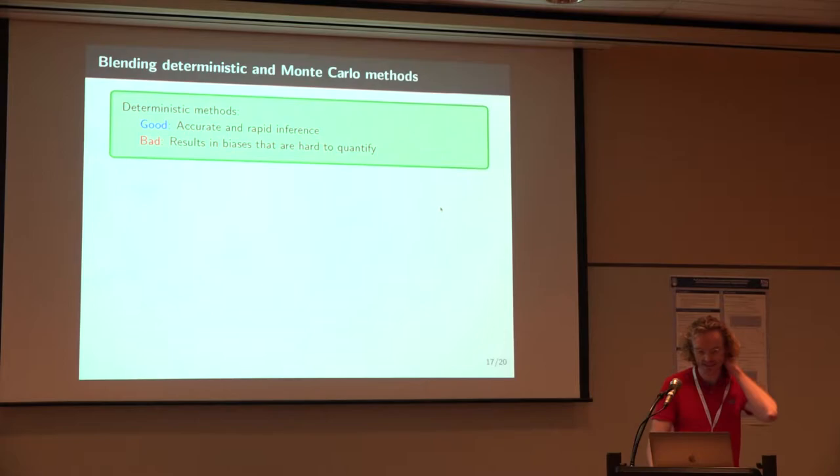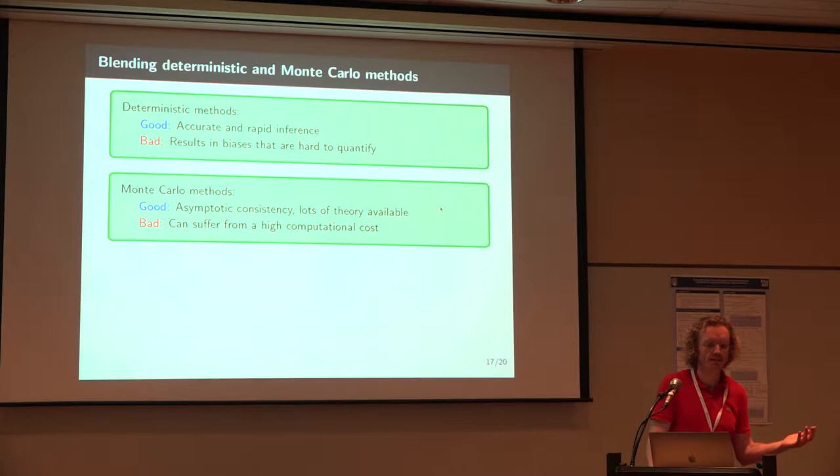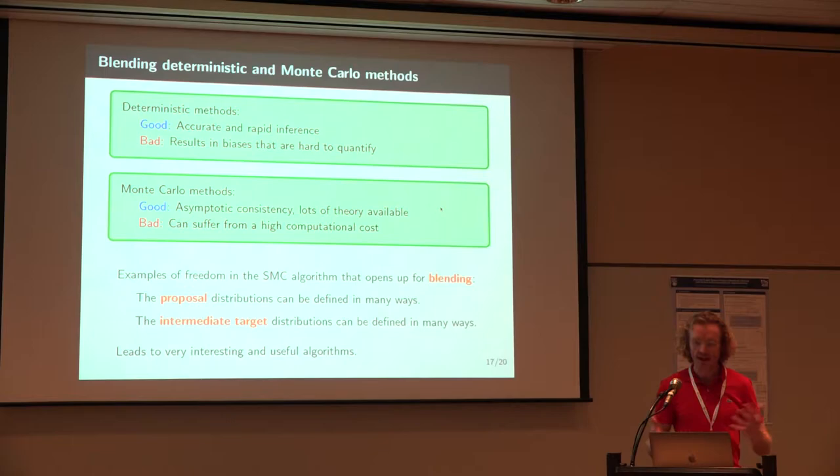But in terms of why would you want to combine them? Well, the deterministic methods are good, in the sense that they are actually very, very good, and extremely fast, in general. But the bad thing is that it's quite hard to do theory on these things. Monte Carlo, on the other hand, you can do quite a lot of theory, you have asymptotic consistency. And there is quite a lot done already. So if you can just frame your problem within SMC, you can just use the theory that's there. The bad thing is that it can be computationally expensive. So how do we do this blending?